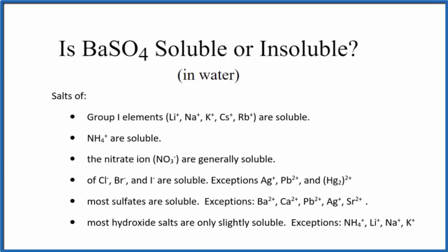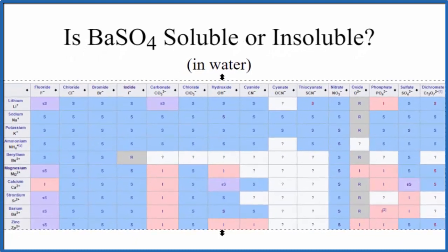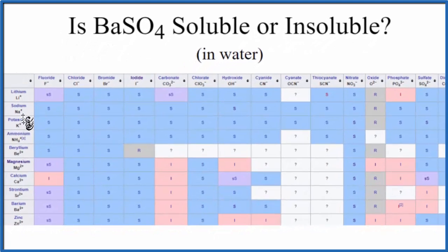We could also look at a solubility chart. So here is a solubility chart, just a portion of it. We look down, and barium is right here, Ba2+, across the negative ions.